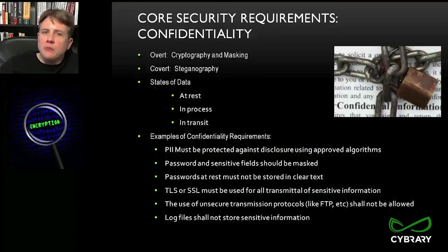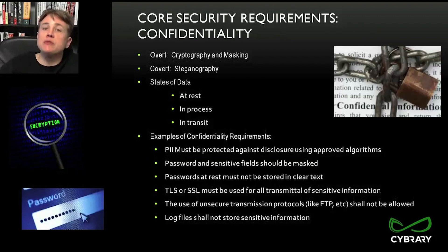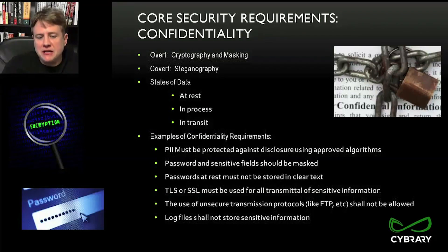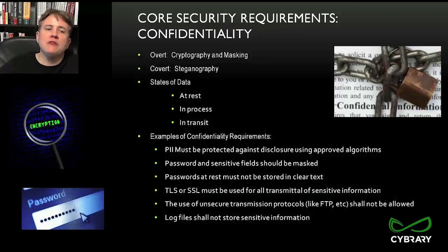When we talk about cryptography, we're talking about encryption. When we talk about masking — for instance, when you enter a password and you see asterisks instead of the actual password, that's masking. That keeps customer service reps from seeing vital information. If they pull up your account, they'll see nothing but asterisks and then the last four digits of your social security number. That helps address overt attacks on cryptography.